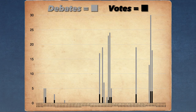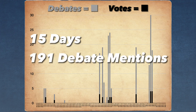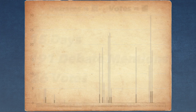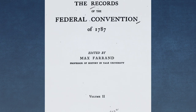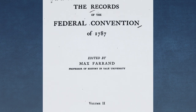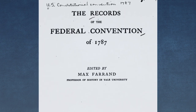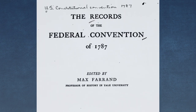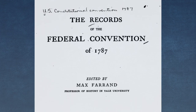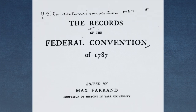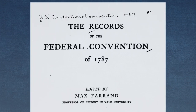All in all, debate took place on 15 specific days with 191 separate debate mentions and 26 different votes. One debate data point derives from a single delegate addressing the convention and advocating for or against a particular method as indicated in Madison's notes.